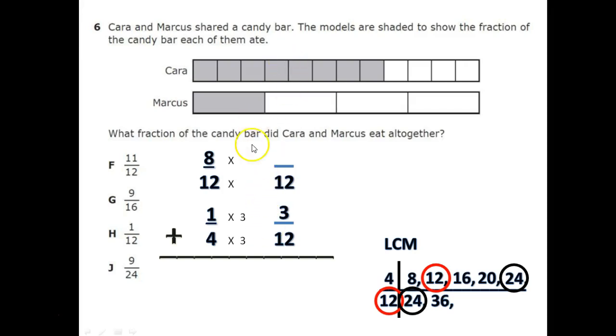Go up to the 12. 12 times what is 12? 12 times 1 is 12. Whatever you do to the bottom, you do it to the top. So 8 times 1 would be 8.